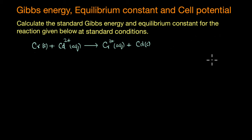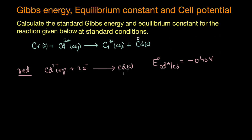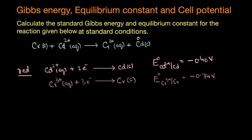Writing down the half reactions, cadmium appears in the reduction half reaction. The standard electrode potential for cadmium is −0.40 volts — you can find these values from the table provided in your textbooks. For chromium, the equation representing its reduction is Cr³⁺ + 3e⁻ → Cr, and the reduction potential for this reaction is −0.74 volts.